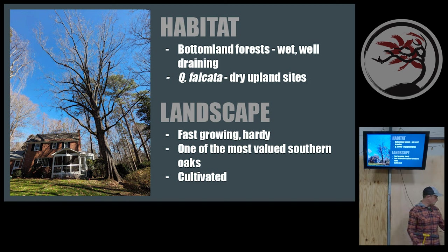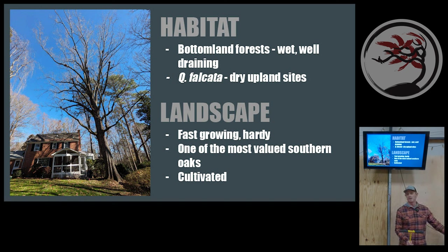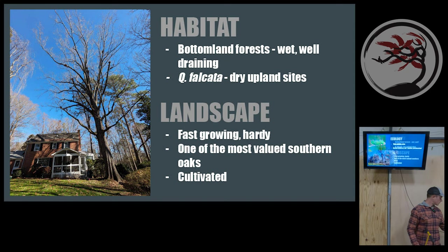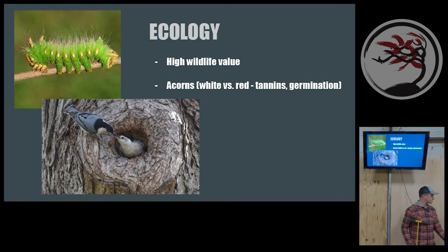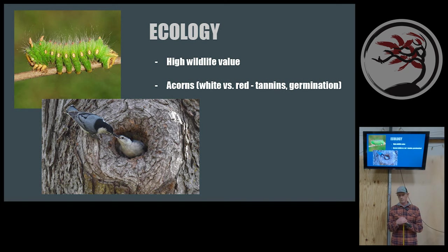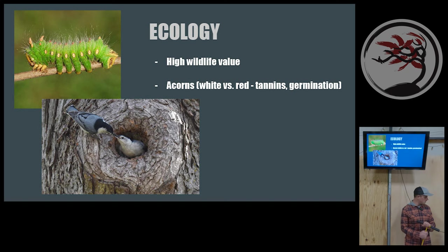Cherry bark oak is often cultivated, so you'll find it in places it likely wouldn't naturally occur. Once I picked up that they exist, I started noticing them a lot — I suspect three-quarters of what I was calling black oak were probably cherry bark oak. Similar to all oaks, more and more clients are interested in what their landscape is doing for local flora and fauna. Oaks support over 500 unique species of Lepidoptera — moths and butterflies.